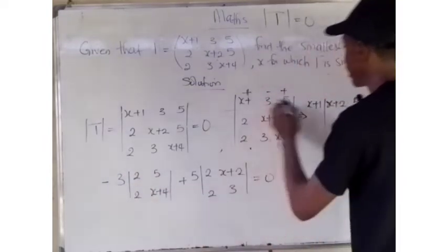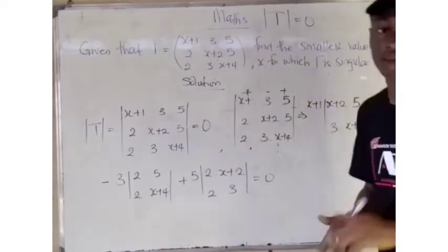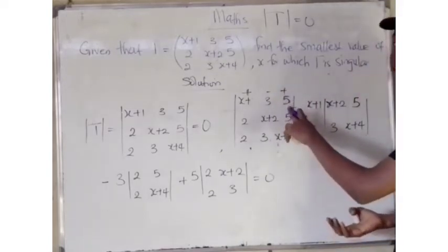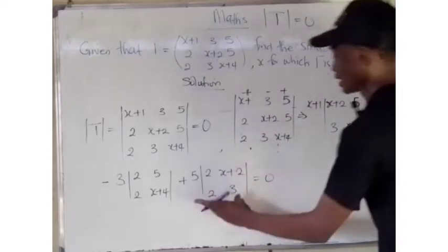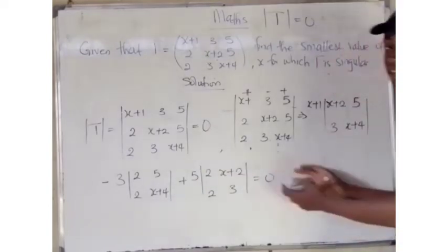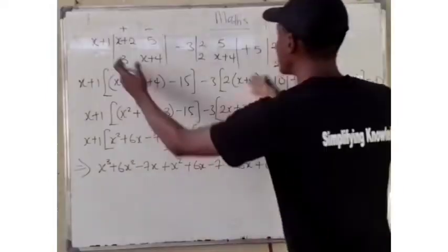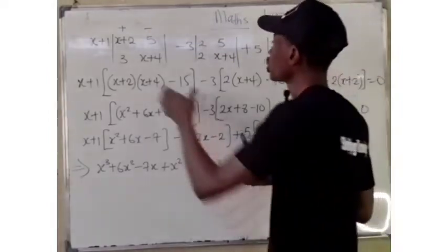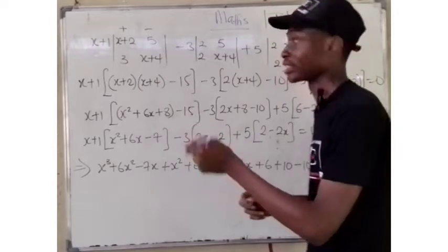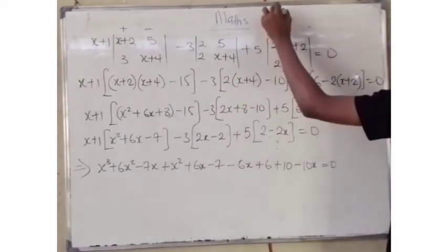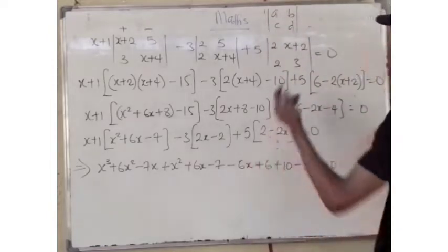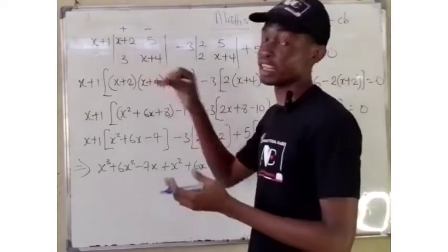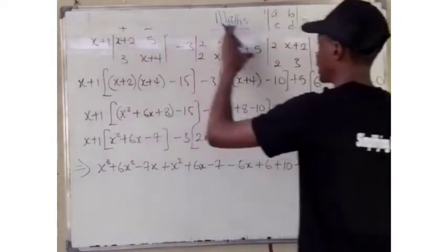We are multiplying everything with minus 3. Then, finally, the third element on the third column is 5 and it has a plus sign. We find its minor matrix, which is 2, x plus 2, 2, and 3. Remember to equate everything to 0 because it is a singular matrix. For a 2 by 2 matrix A, B, C, D, the determinant is A times D minus B times C. That is exactly what we are going to do — find the determinant of each minor matrix and multiply.